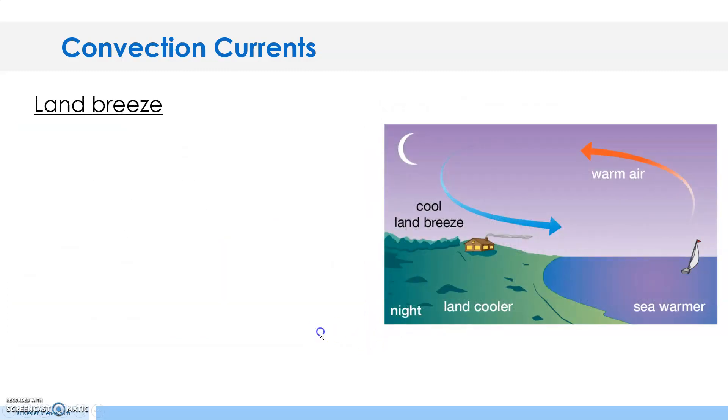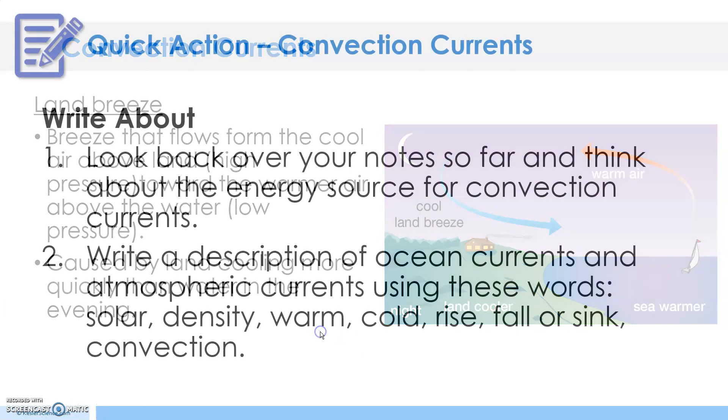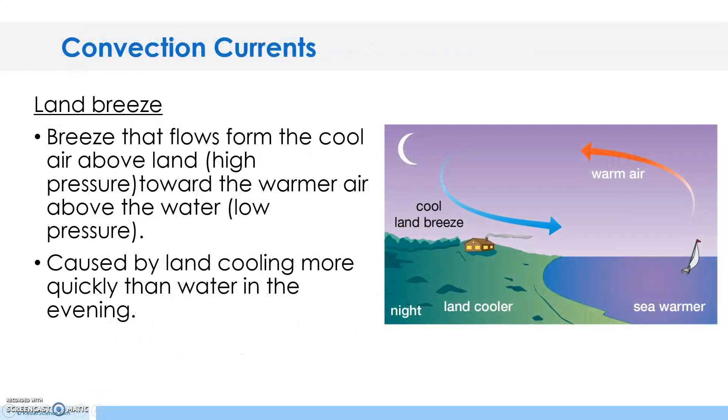The second type - the sea breeze, well excuse me, land breeze - is the breeze that flows from the cool air above the land. So now we have cool air or high pressure over the land towards the warmer air above the water or the low pressure. This is caused by land cooling more quickly than water in the evening time, so at night the sea is warmer than the land.